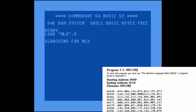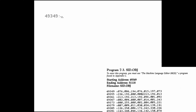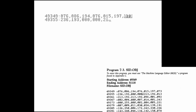You type in MLX, load up this BASIC program, give it a run, and it asks for the starting address. On this page you can see it starts at 49349 and ends at 51118. Then you start typing in those numbers, and the very last number is a checksum — if you type it right, you get a little beep; if you type it wrong, you get a little buzz. You type all this in and then save it to a file called sid.obj.